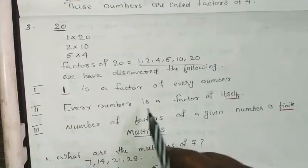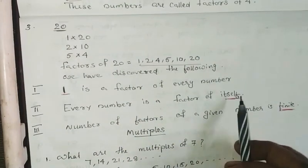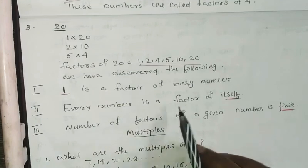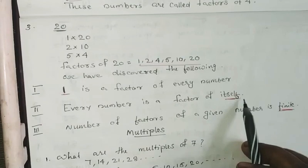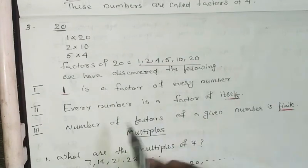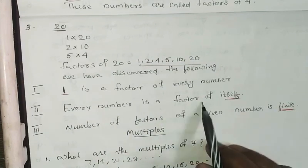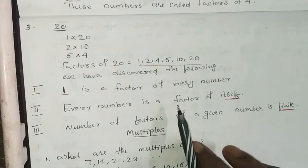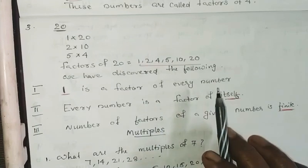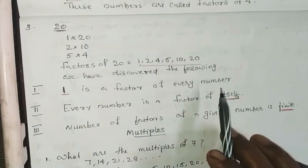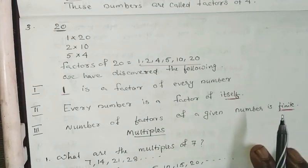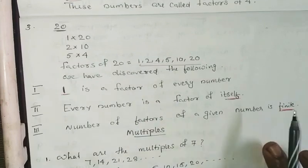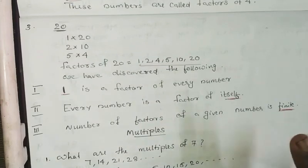We observe that every number is a factor of itself. 1 is the factor of every number. Every number is a factor of itself.